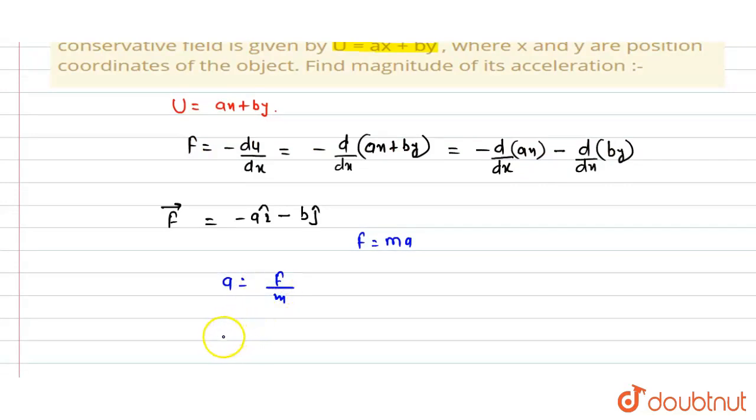We have to find the magnitude, so magnitude of acceleration vector a equals F vector divided by m. Now we put the value of F, and F is given as minus a i cap minus b j cap.